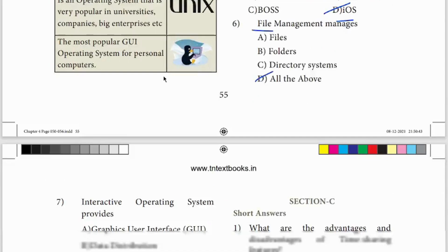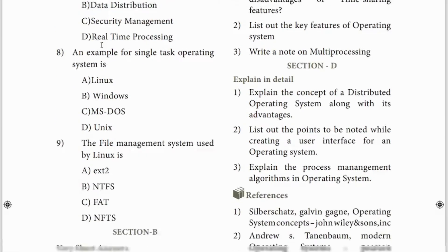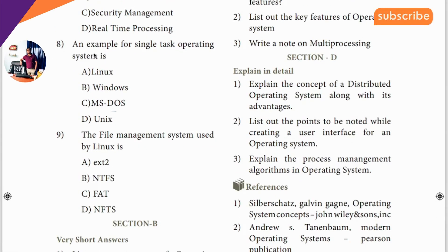Seventh question: interactive - the answer is graphical user interface (GUI). Eighth question: an example for single task operating system. The clue is single task. The answer is MS-DOS - single task match with MS-DOS.